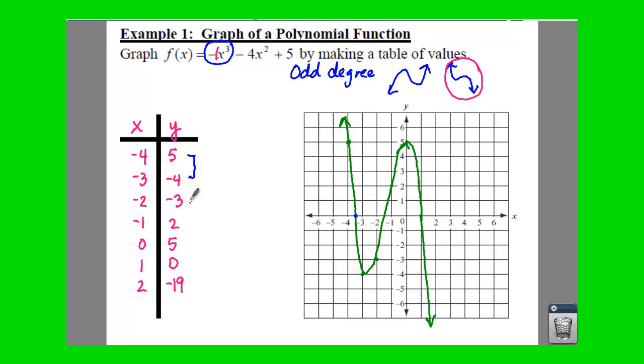Notice sign change here because they're both negative. Sign change from here to here. So that means we should have a zero in between x equals negative two and negative one. And then you also, no sign change here, no sign change here.